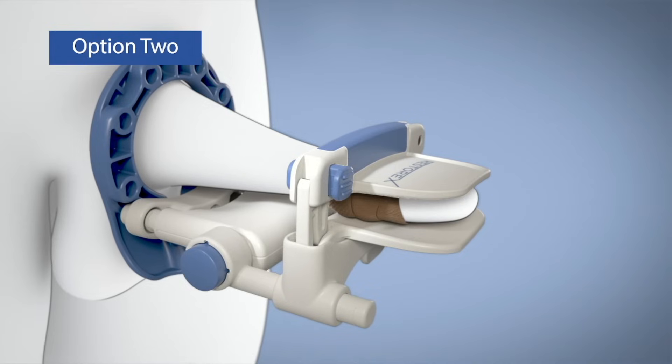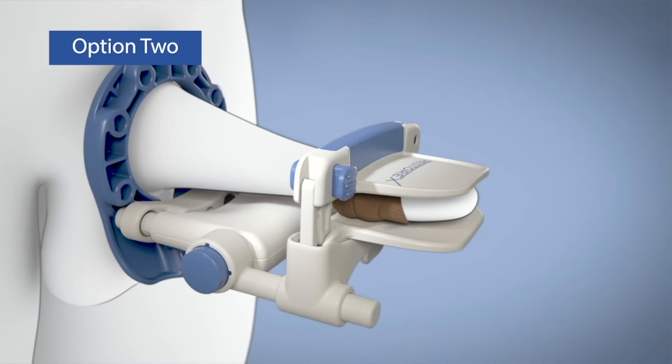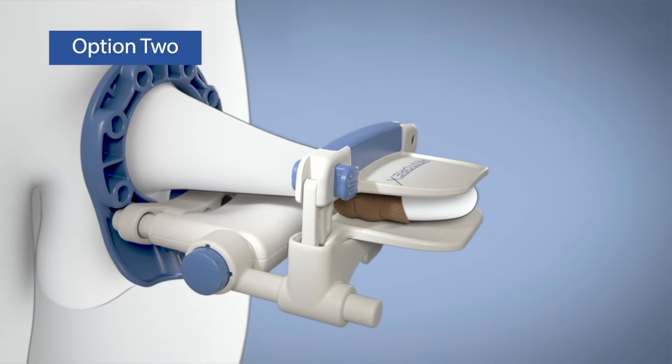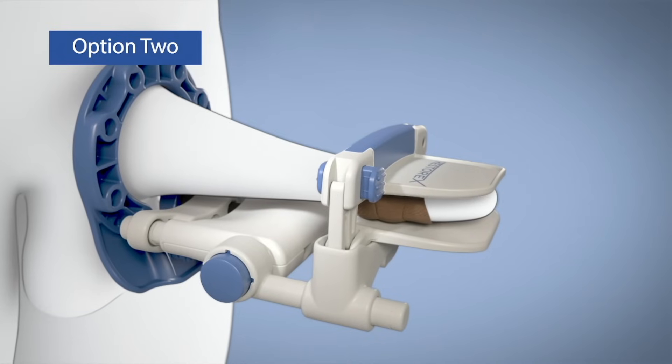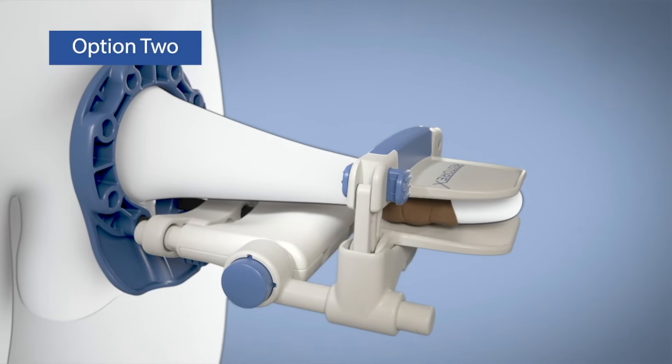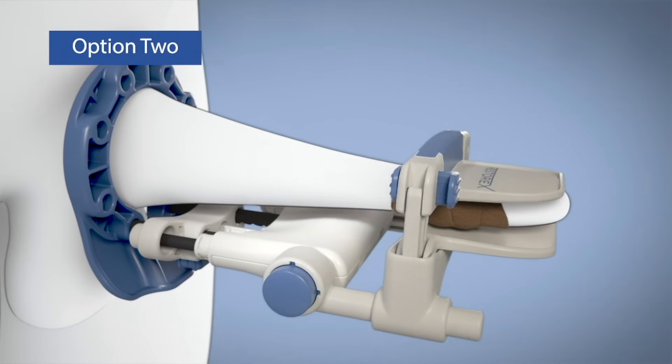Many men have found a second method of extending and adding tension to be easier, particularly those that have difficulty with the head of their penis slipping out of the clamp. First, advance the Restorex device along the extension rods until the penis is nearly fully stretched. Next, slowly and carefully release the tension rods, as shown.